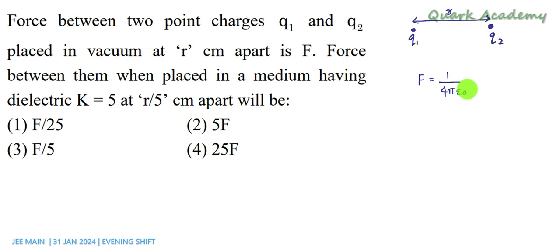1 by 4π epsilon 0, q1q2 by r squared. What do we need to do this?